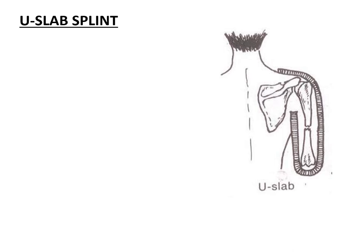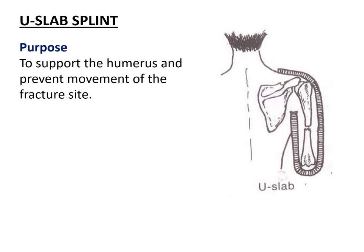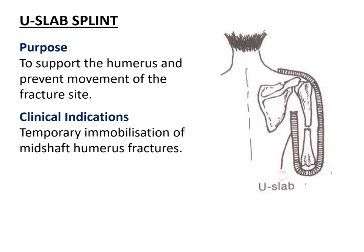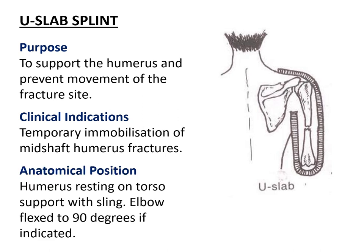A few words about the U-slab splint, which is often used for a fractured humerus. The purpose is to support the humerus and prevent movement at the fracture site. Indications are either temporary immobilization of mid-shaft humerus fractures or complete definitive treatment. It's important to understand that the U-slab works by using gravity to assist the fracture to lie in a reduced position. The anatomical position is often with the humerus resting on the torso, supported in a sling, and the elbow flexed to 90 degrees.